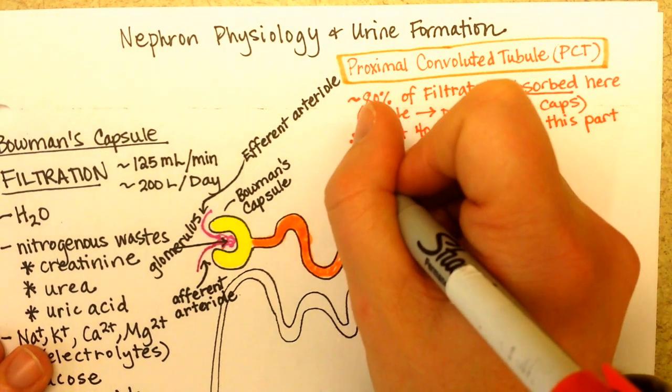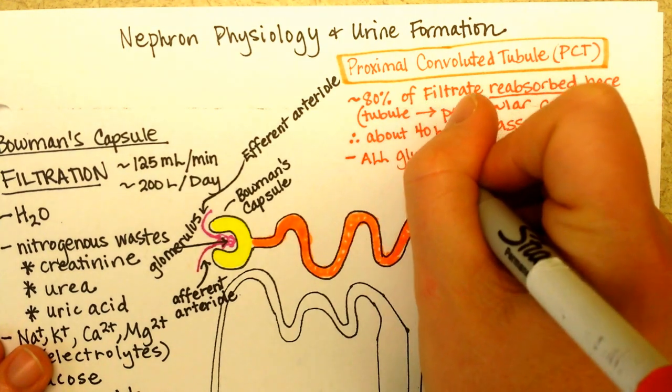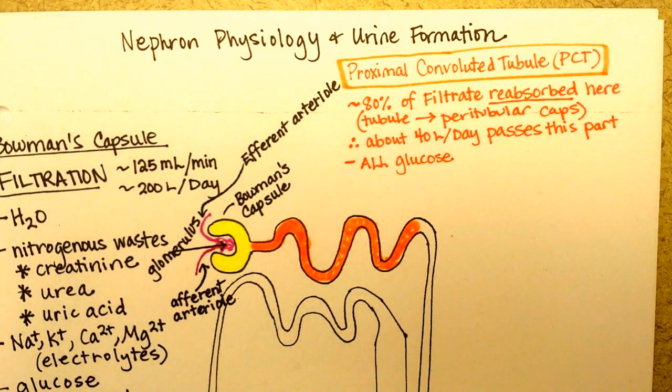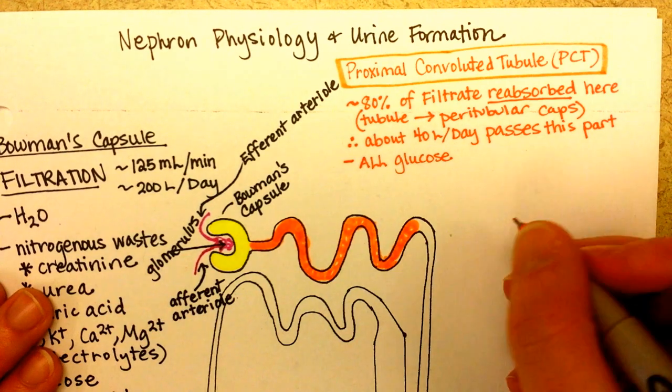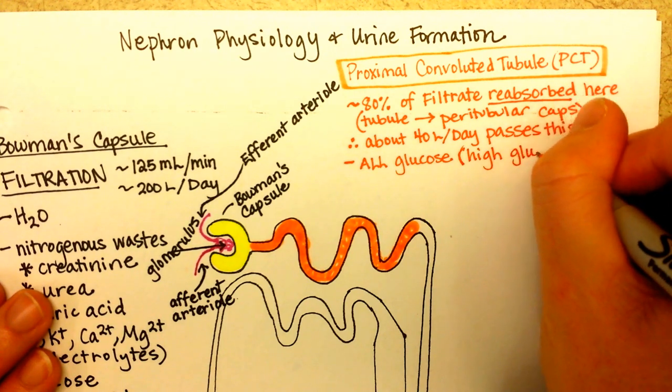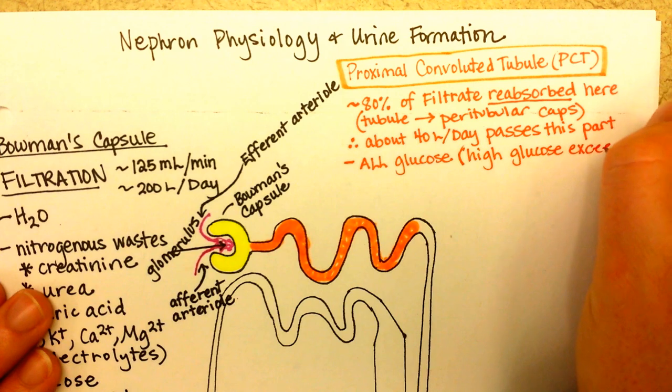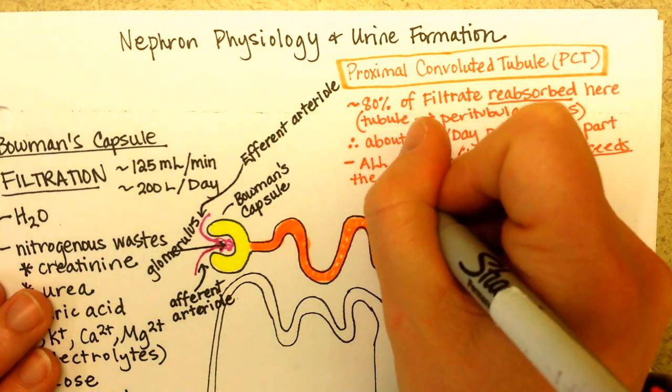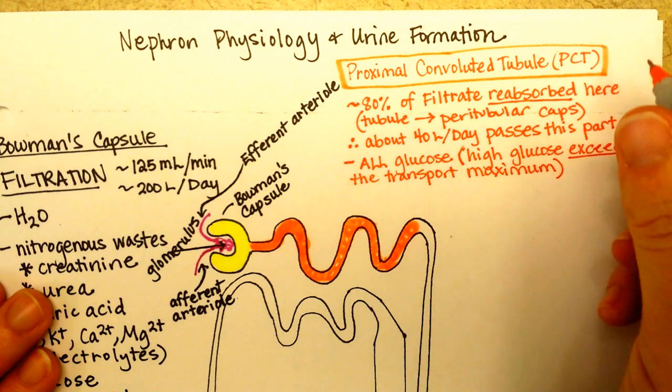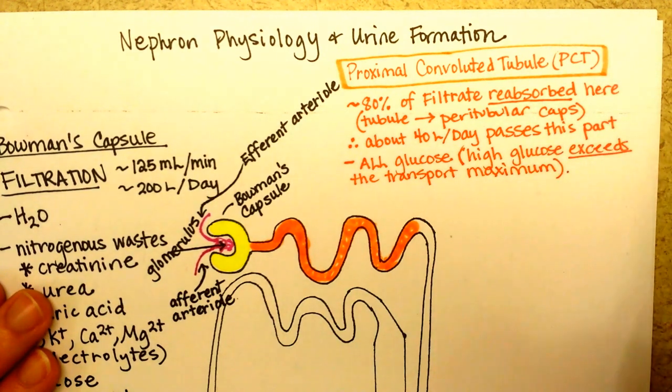So what does get reabsorbed? What do we really care about here? Well, all of the glucose will get reabsorbed. But you do have a transport maximum, like how many molecules of glucose can be returned to the blood as they pass through. And if there's so much blood sugar, then it surpasses the transport maximum, then you can lose glucose in the urine. And so that's why diabetics can end up with glucose in their urine.